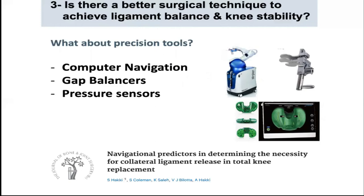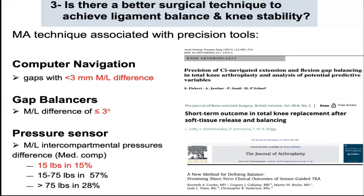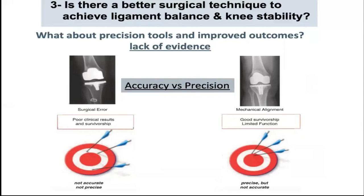Precision tools were introduced assuming that better mechanical alignment would lead to better clinical outcomes. The use of precision tools in mechanical knee alignment has improved gap balancing to less than 3 mm difference with computer navigation in about 90% of cases, but they did not restore the pre-disease ligament balance. Using standard instruments, our precision is weak and we often miss the target. Using precision tools like computer navigation or robots, we are very precise, but we are missing the target — we are not accurate. Simply, we are using technology advances to achieve a wrong target. That's why using a precision tool to achieve the mechanical alignment goal did not improve patient outcomes.